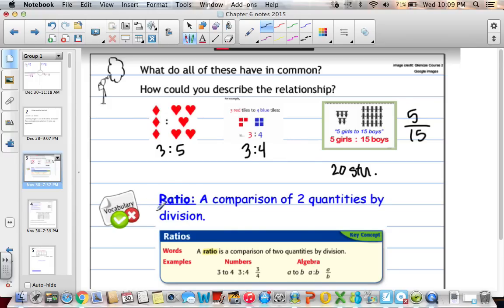A vocabulary word that you need to write down is ratio. And it's a comparison of two quantities by division. So girls and boys, two different quantities. And we are comparing them by dividing. Girls, boys. Here we have diamonds and hearts. Red tiles, blue tiles. So two different quantities.